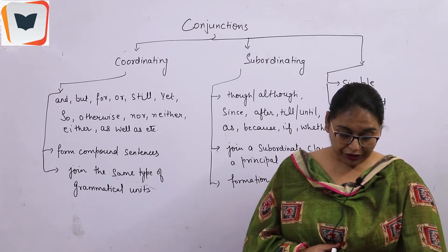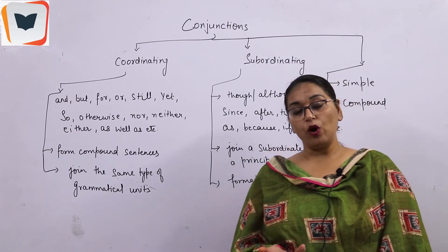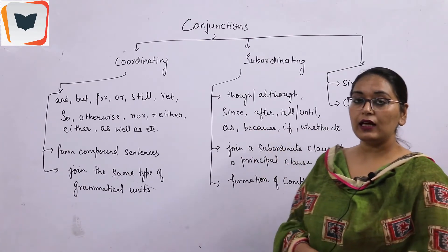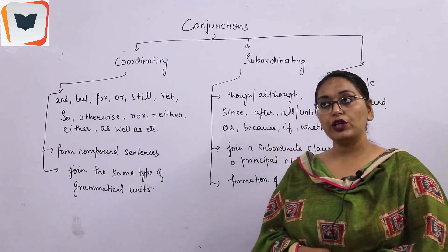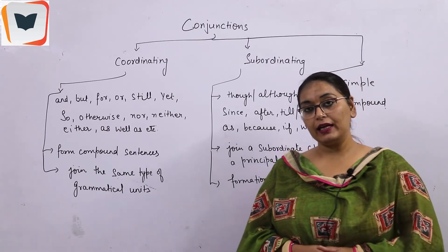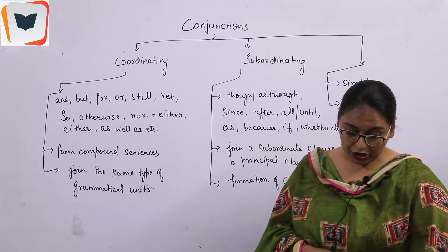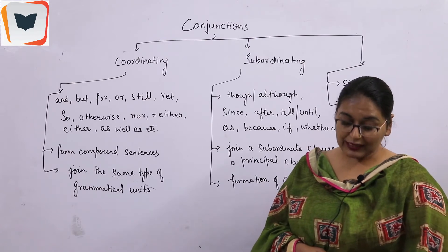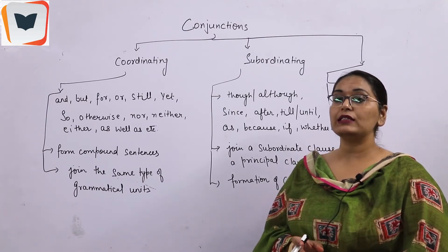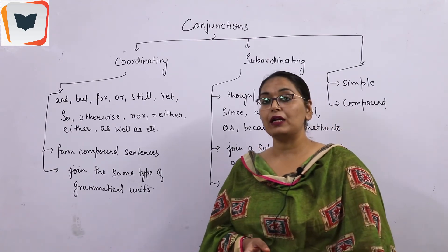You can see this example: 'They have been living here since 2011.' Here 'since 2011' — what is 2011? It is a point of time. 'Since' here is a preposition. But if I use the sentence: 'They shall live here since this place is available' — then 'since this place is available' is a complete clause. So 'since' here is a conjunction.